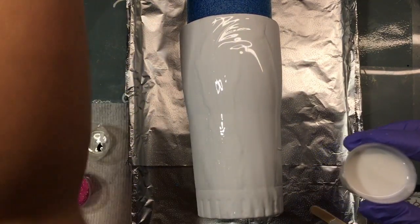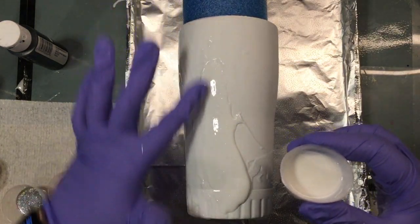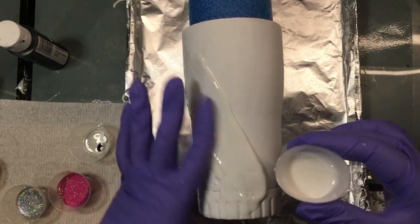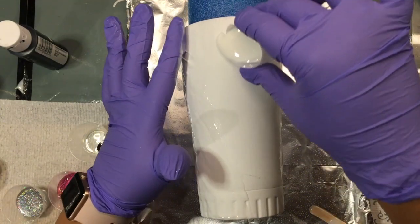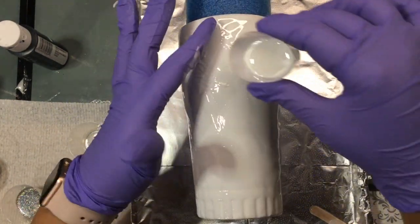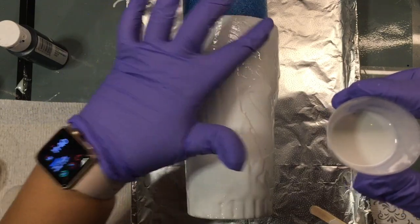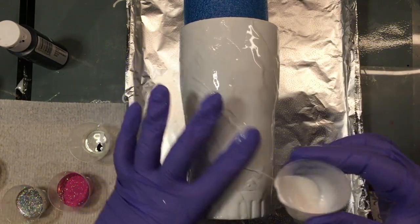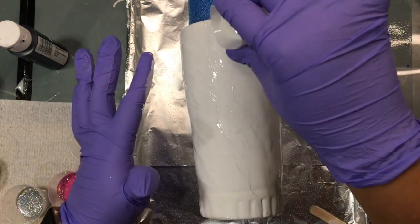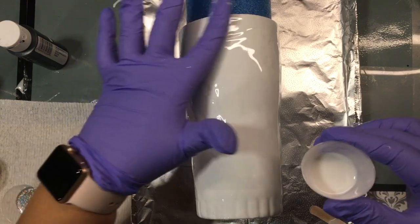You want to cover the whole thing. Just keep adding and just add it with your fingers so you can feel where you still need epoxy until you have the whole cup covered. Make sure you do the bottom as well.